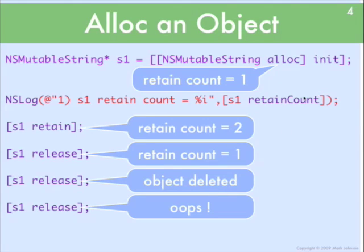When you first create a new object with alloc, that object has a retain count of one. If we look at this example, we've got NSMutableString S1 — we alloc it and then initialize it. At the point that it's alloc'd, it has a retain count of one. You can see that retain count because there's a method on NSObject which is the retainCount method, which will return the current value of the retain count. You can see here in this NSLog statement, 'S1 retain count is', and of course it's going to print out one in this case.